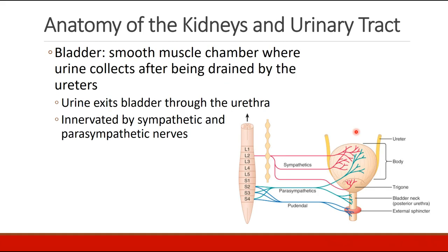A quick note about the anatomy of the urinary tract: the bladder is a smooth muscle chamber where urine collects after being drained by the ureters. Urine then exits the bladder through the urethra, and this structure is innervated by sympathetic and parasympathetic nerves.